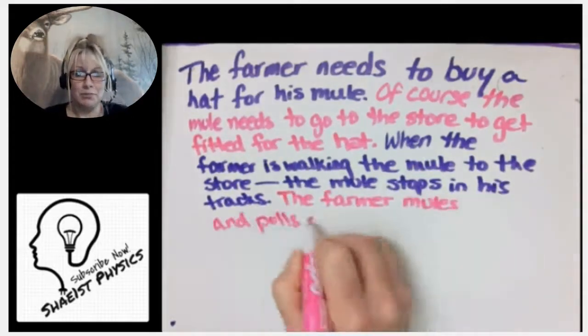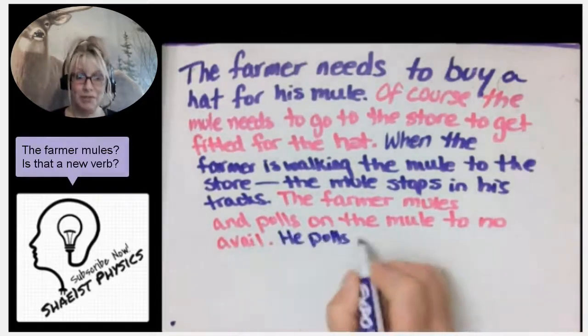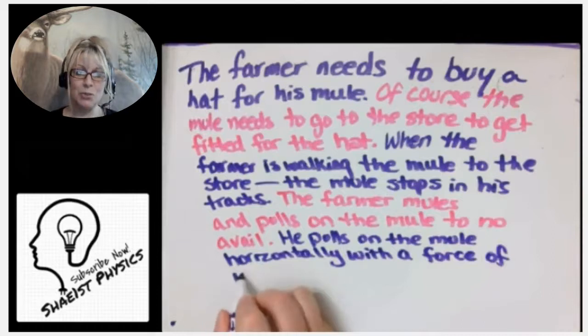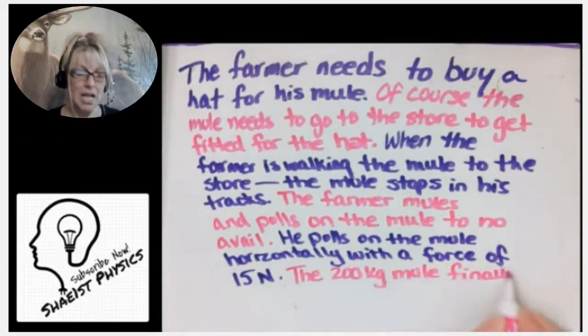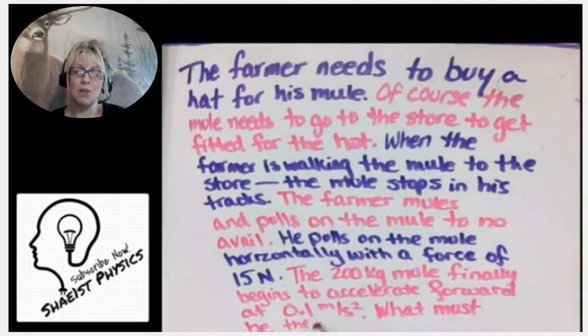And the farmer pulls and pulls on the mule to no avail. He pulls on the mule horizontally with a force of 15 newtons. The 200 kilogram mule finally begins to accelerate forward at 0.1 meters per second squared. What must be the coefficient of friction?